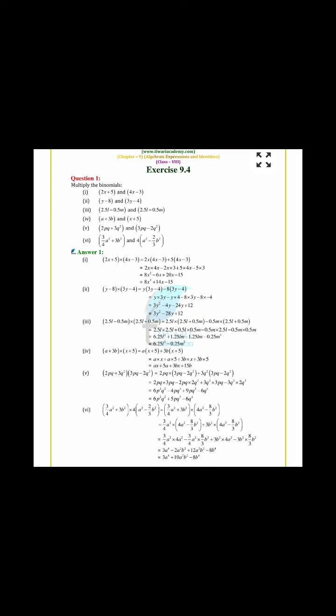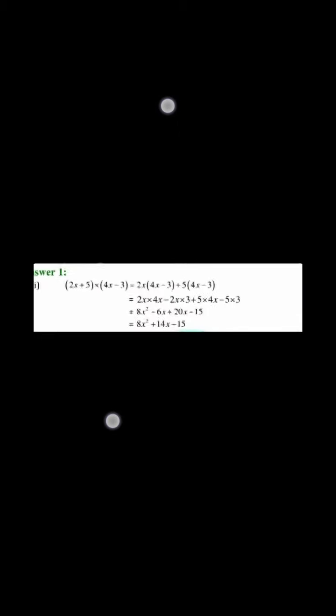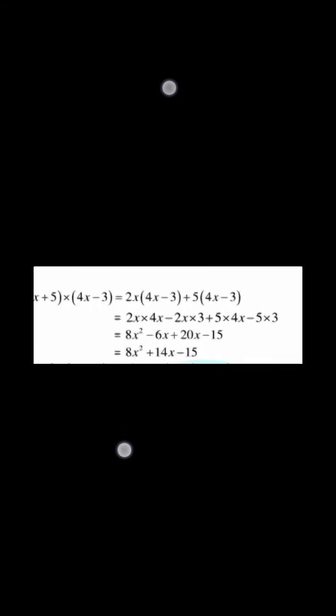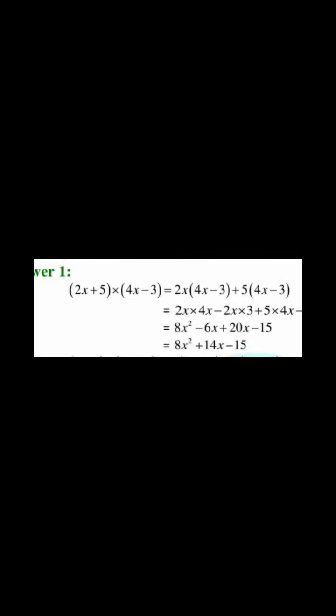So here let us do the first question, that is 2x plus 5 into 4x minus 3. In order to make you understand, look, first what we have to do: multiply 2x with 4x minus 3, and then 5 with 4x minus 3.